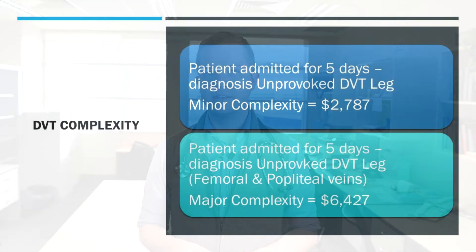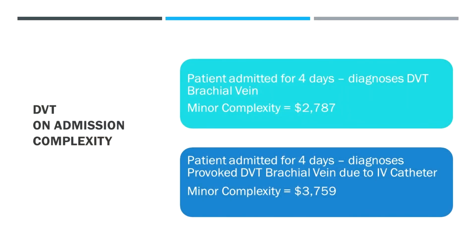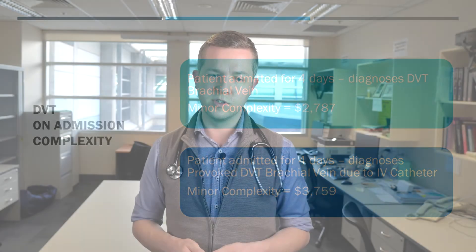In my practice I think particularly of PICC-associated DVTs, which are definitely not uncommon. Here's an example: someone admitted for five days with an unprovoked DVT — if that DVT is specified as involving the femoral and popliteal veins, that increases complexity significantly, and you can see the big change in funding there. If you have a DVT in the brachial vein in the upper limb and most of these are actually provoked by IV cannulation or a PICC line, and you specify that it is due to a catheter, it fits into a different category of coding — even at the same minor complexity level you're getting another thousand dollars of funding because there is complexity innate to that particular diagnosis.